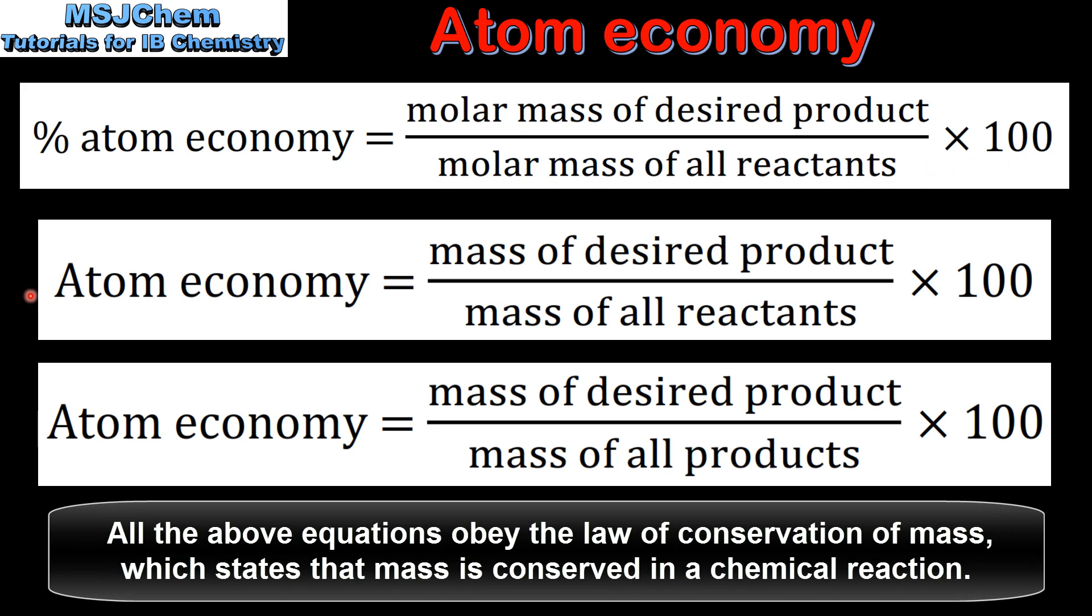There are other versions of the equation: atom economy equals mass of desired product divided by mass of all reactants multiplied by 100, and mass of desired product divided by mass of all products multiplied by 100.